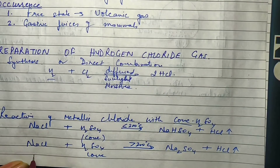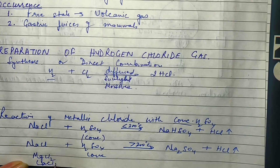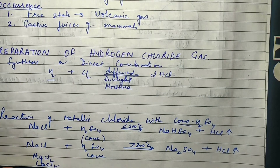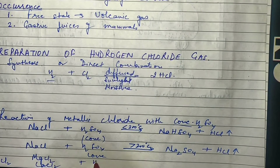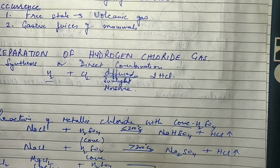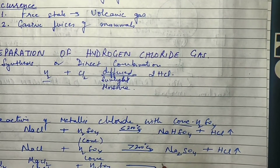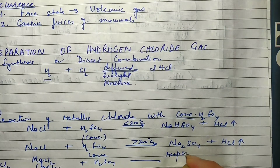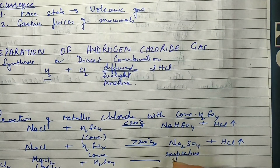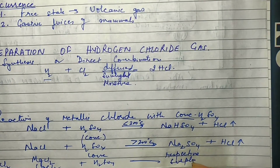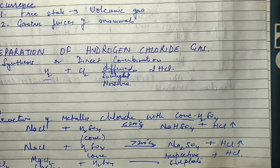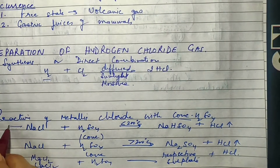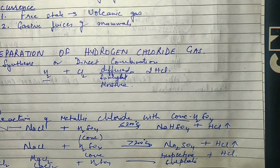The same reaction carried out at a temperature greater than 200°C will form Na₂SO₄ and HCl gas. The reaction could also have been done with magnesium chloride, calcium chloride, or copper chloride — any of them could react with concentrated H₂SO₄ to form the respective sulfate and give out HCl. Of these reactions, the NaCl reaction is used for laboratory preparation of HCl.